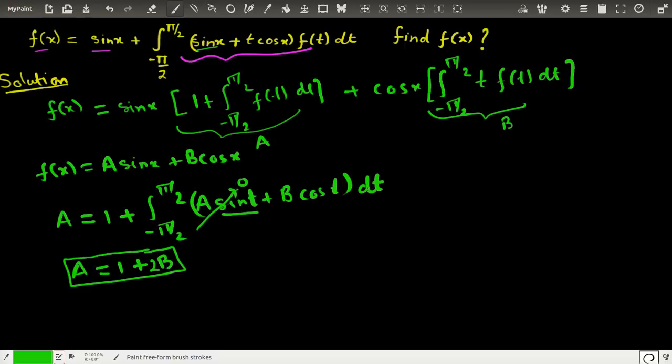Since there are two unknowns we need to have a second equation as well. So we say B is equal to, by definition, now this will be minus π/2 to plus π/2, t times now we can go with definition of the function, and the function definition is A sin(t), A sin(t) plus we have B cos(t) dt.